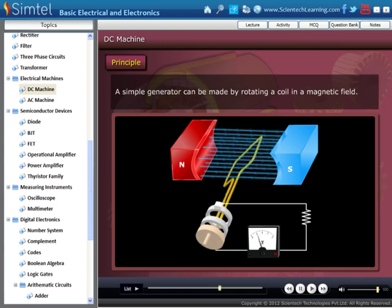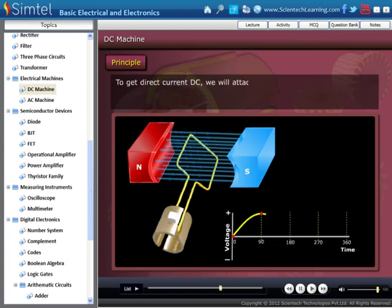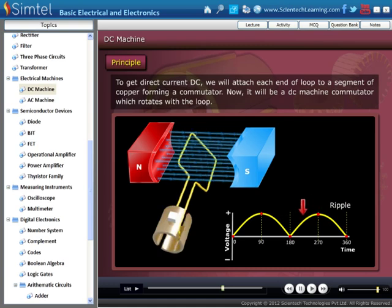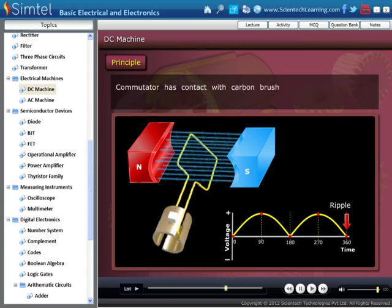All rotating conductors produce AC internally. To get direct current, we will attach each end of loop to a segment of copper forming a commutator. Now it will be a DC machine commutator which rotates with the loop. Commutator has contact with carbon brushes by means of which a voltmeter can be connected. The loop of conductor connected to the commutator is referred as armature.